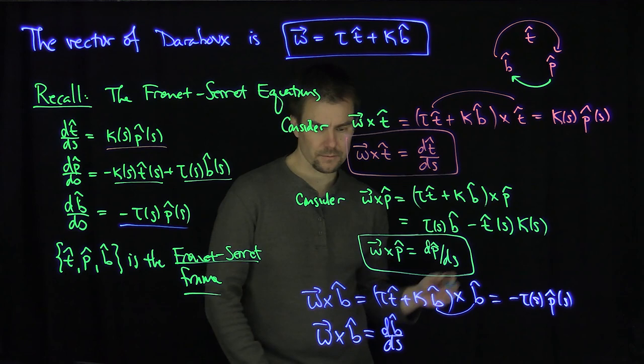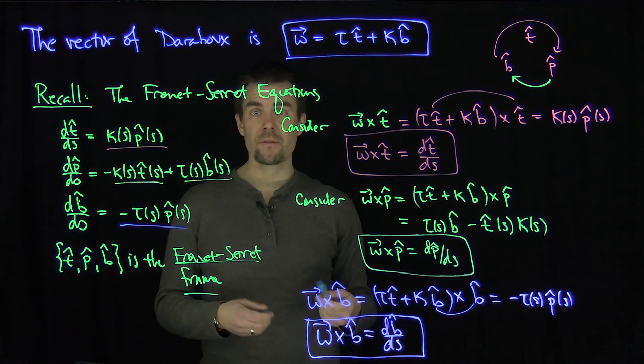So in other words, if I cross the Darboux vector with anything in the Frenet-Serret frame, I get the derivative of that vector in the Frenet-Serret frame. Thank you very much.